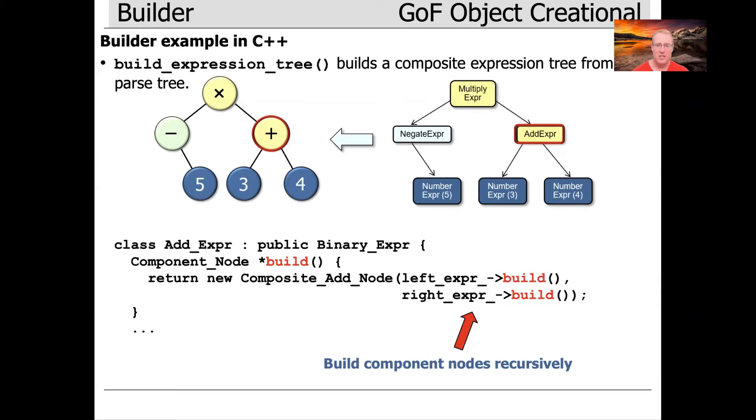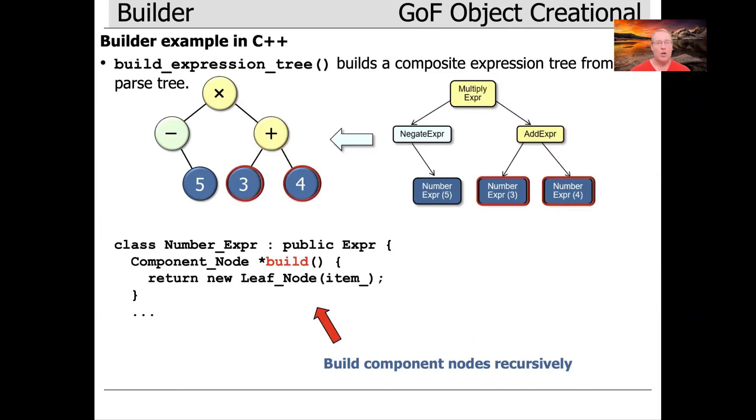As you can see, what happens is this comes back as a component node pointer, and that's just using the magic of inheritance and dynamic binding to do our bidding.